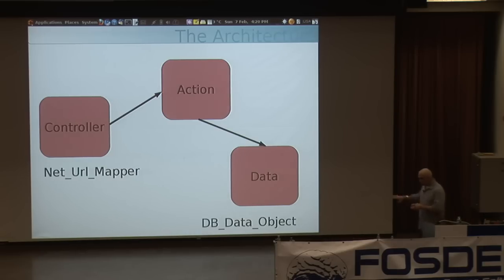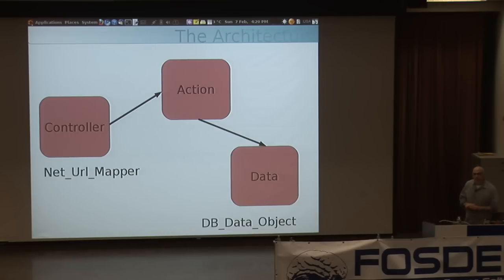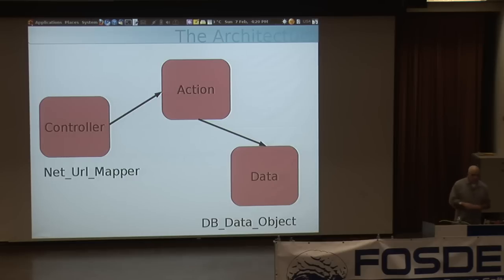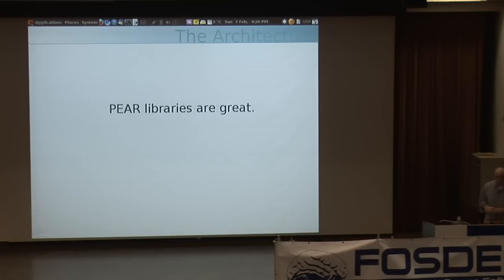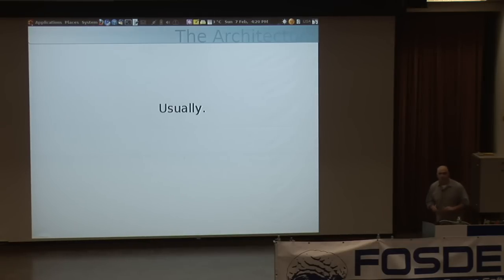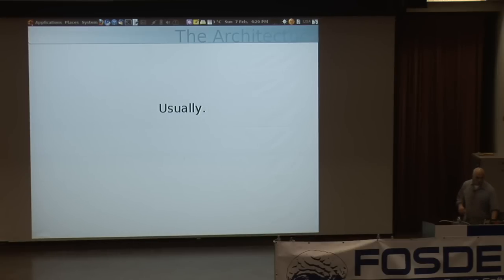Our controller uses a PEAR library called Net_URL_Mapper, which is pretty nifty — it generates URLs backwards and forwards. If you provide it with a path, it generates out some parameters; if you provide it with parameters, it generates out the path. DB_DataObject is the framework we use for database access, another PEAR system. It can use either PEAR DB or PEAR MDB2. It does not yet support PDO, which is a bit depressing, but it will be nice when it eventually does. I think PEAR libraries are great — they're usually the best thing you could get to.